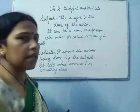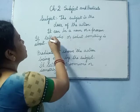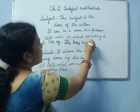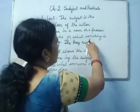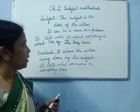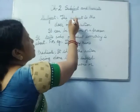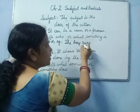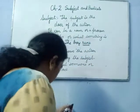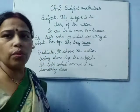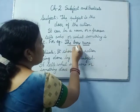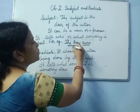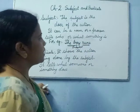The subject tells us who or what something is about. For example, consider the sentence: 'The boy runs.' Here the subject is the doer of the action. The action is 'runs.' Who is doing this action? The doer is 'the boy.' The action is being performed by the boy, so 'the boy' is the subject.